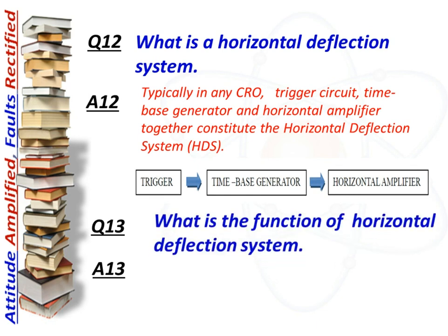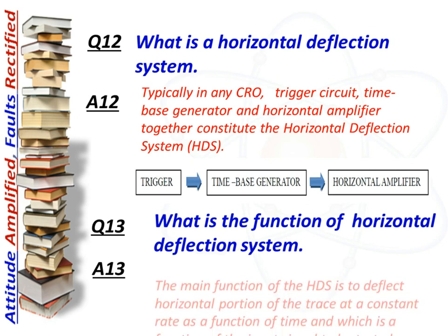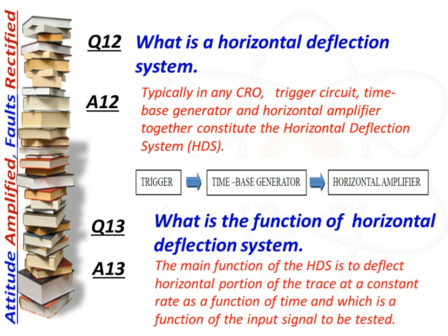Next question: what is the function of the horizontal deflection system? Answer: The main function of the horizontal deflection system is to deflect the horizontal portion of the trace at a constant rate as a function of time, which is also a function of the input signal to be traced.